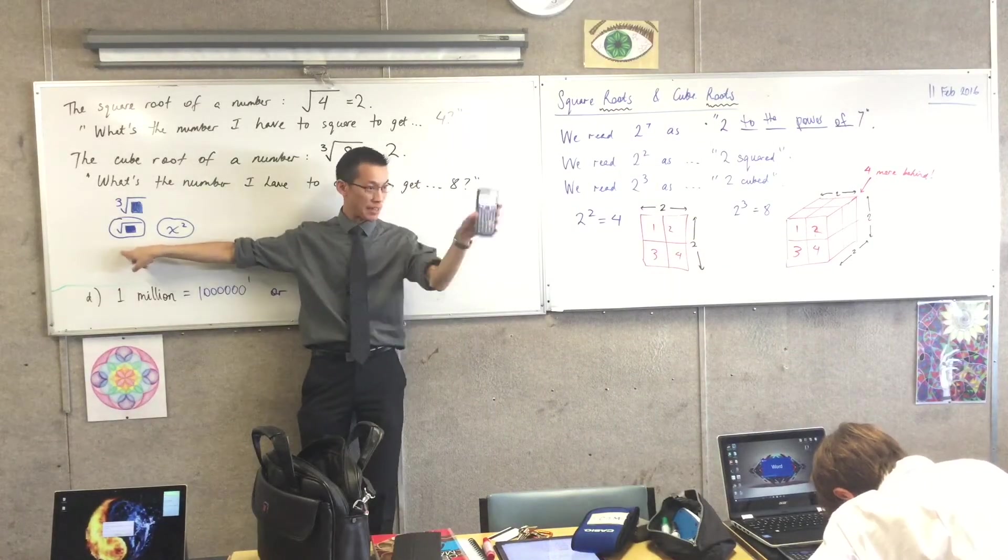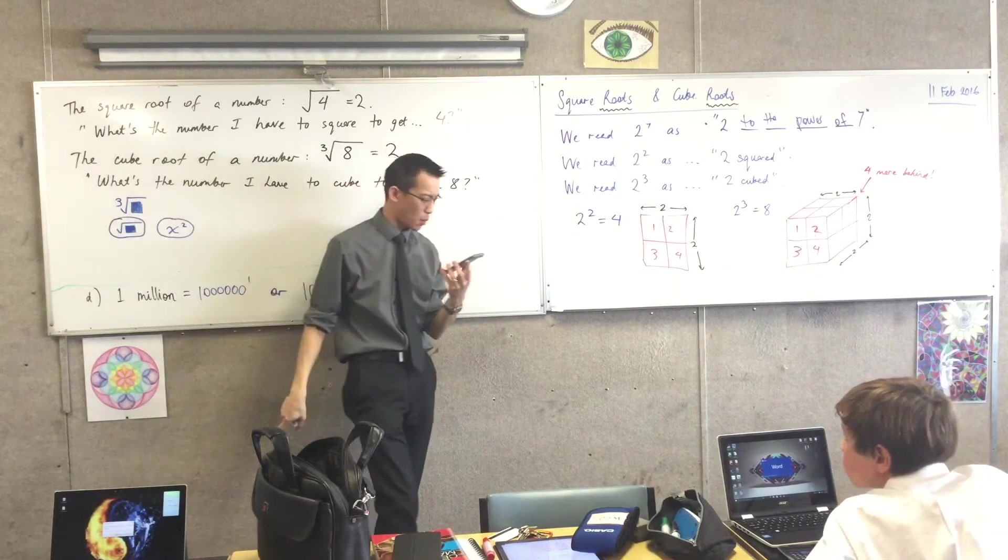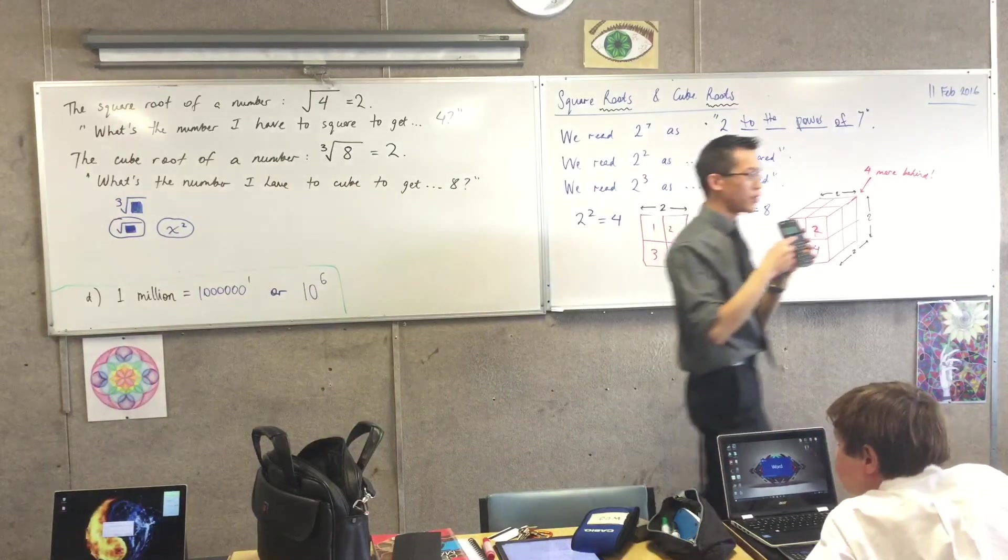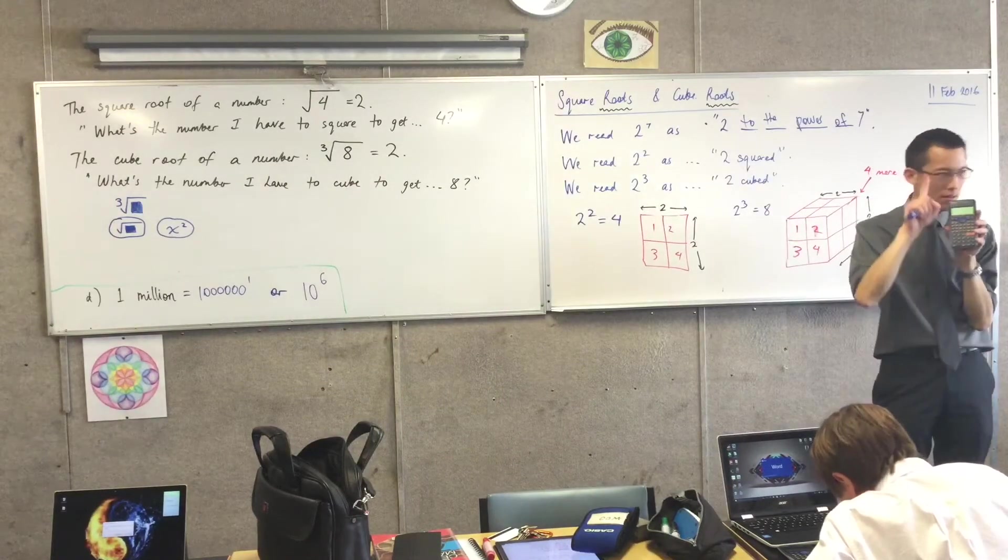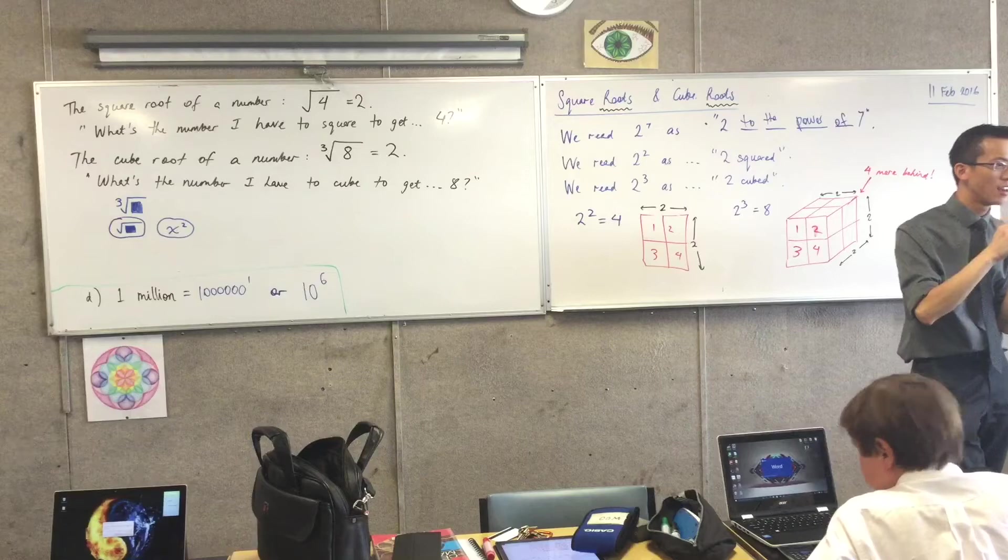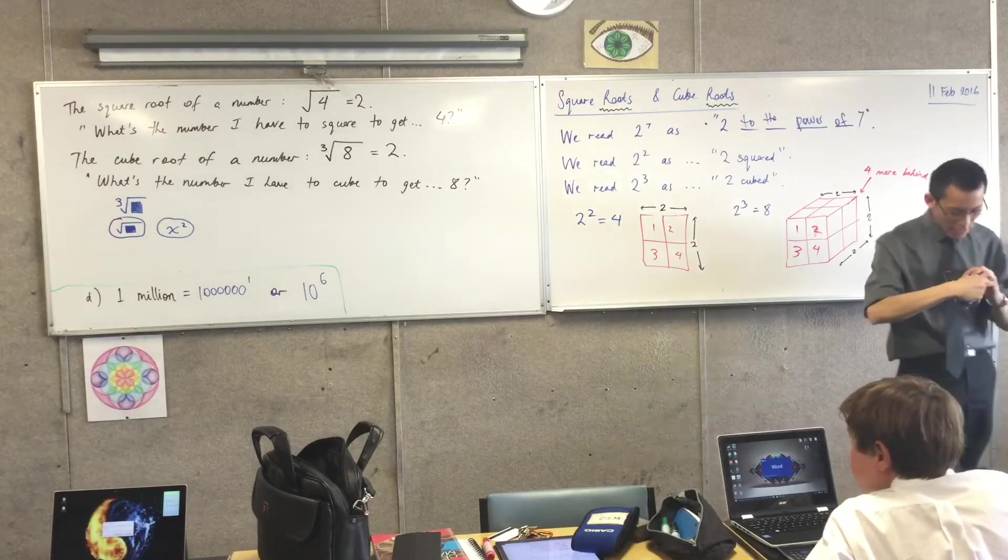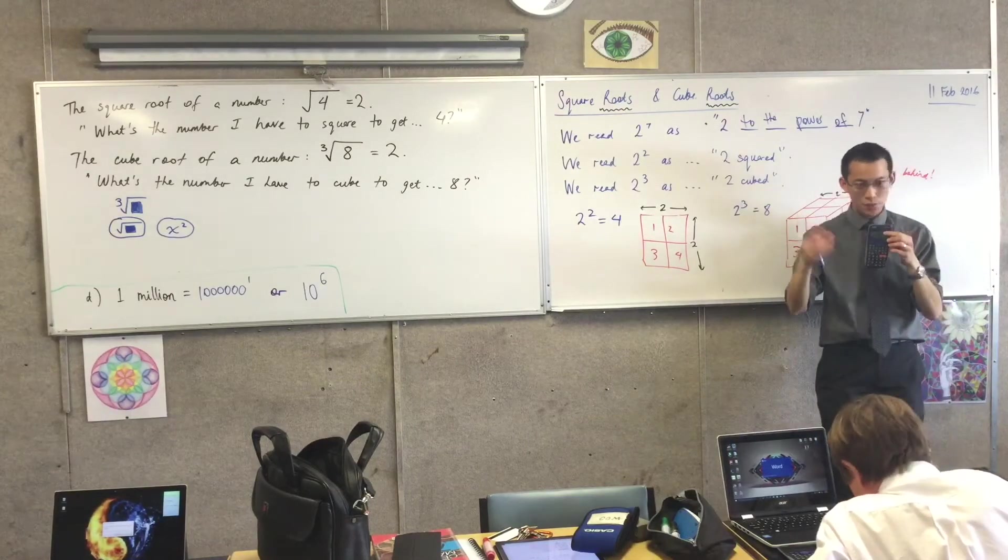Just above the square root button, you can see written, I think it's probably yellow on your calculator, there is the cube root. How do you get to that thing above? How do you get to the yellow? Press shift, and then you click that button. So for any of those buttons, if you want to get to the thing above it, shift will do it.